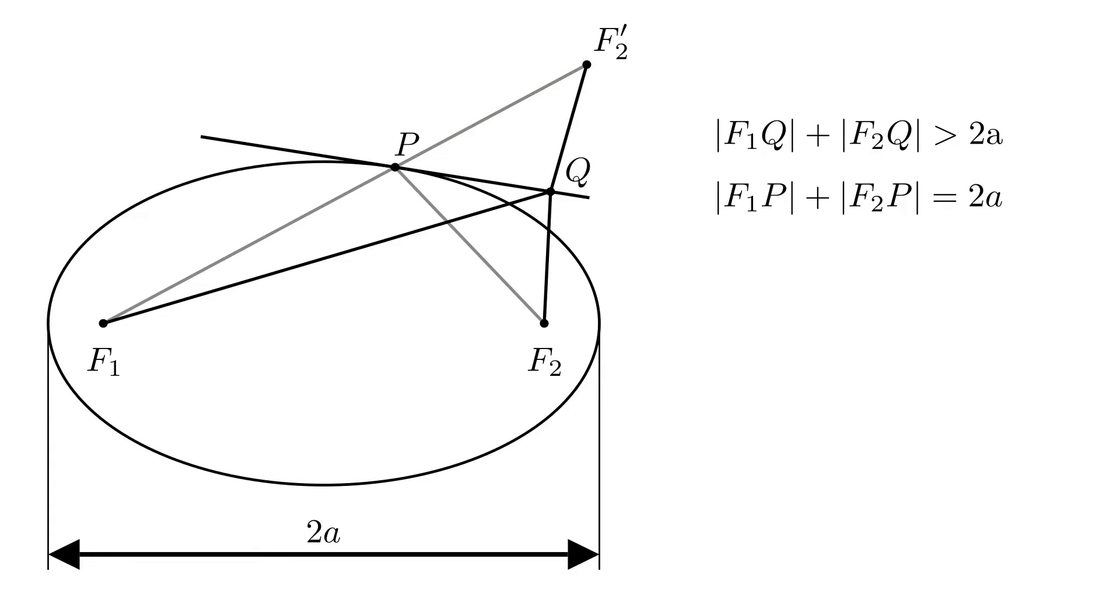And we can substitute that in the two expressions that we already have. So f1q plus f2 prime q is greater than 2a and f1p plus f2 prime p is equal to 2a.